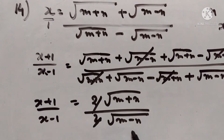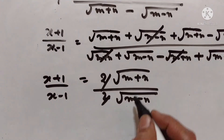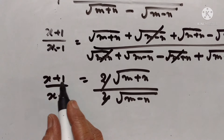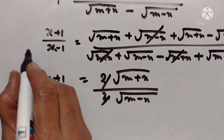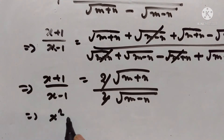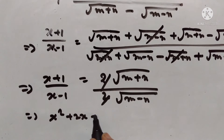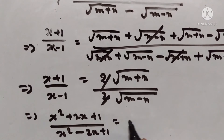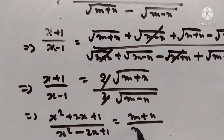The 2s go off. Let us square both the sides. We get x squared plus 2x plus 1 upon x squared minus 2x plus 1 is equal to m plus n upon m minus n.